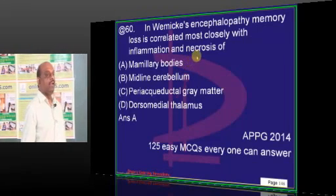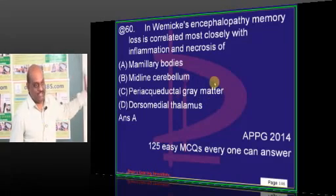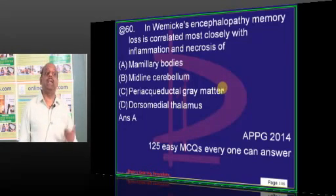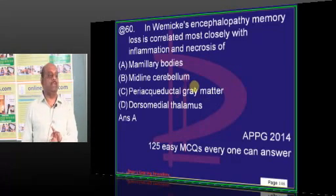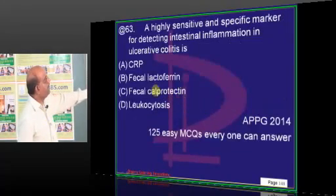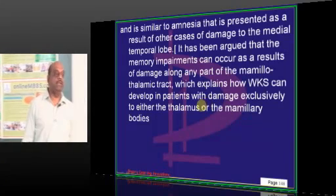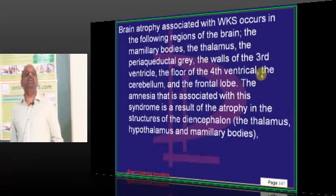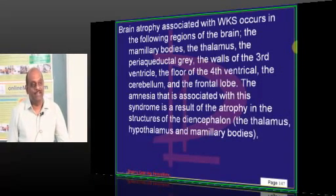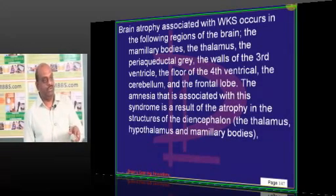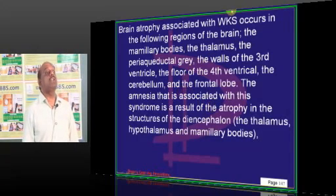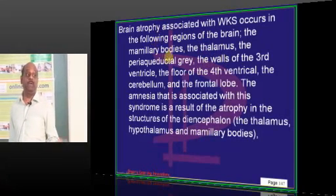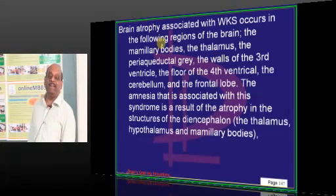Mammillary bodies — though dorsomedial thalamus could also be a potential answer, and the university has accepted that. Both mammillary body and dorsomedial thalamus are mentioned in the literature. In fact, some studies strongly point out that the dorsomedial thalamus is much more important when it comes to memory loss, because even without Wernicke's, any lesion destroying the dorsomedial thalamus leads to memory loss. The examiner may have a reference from a top journal based on a randomized control trial.